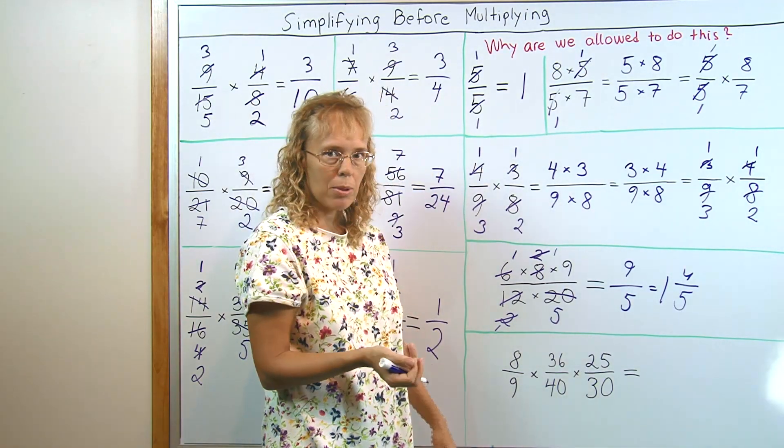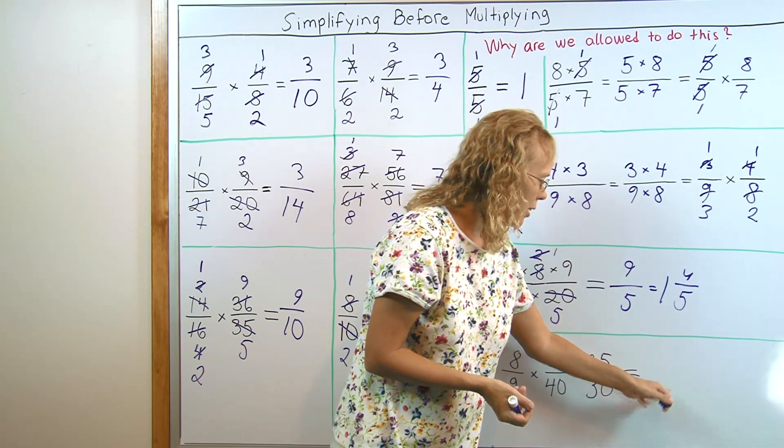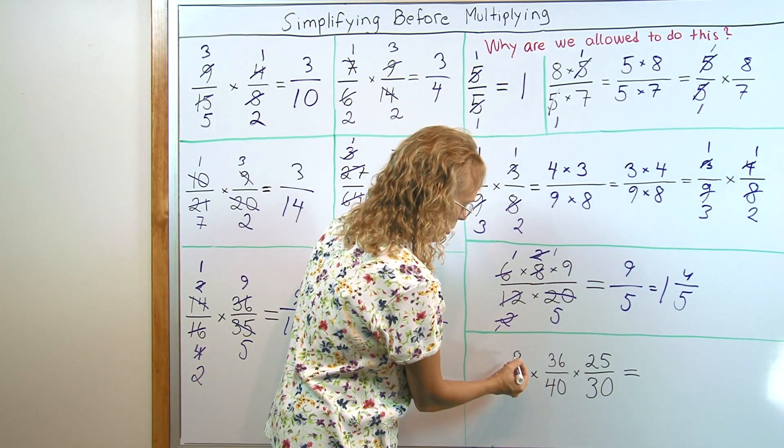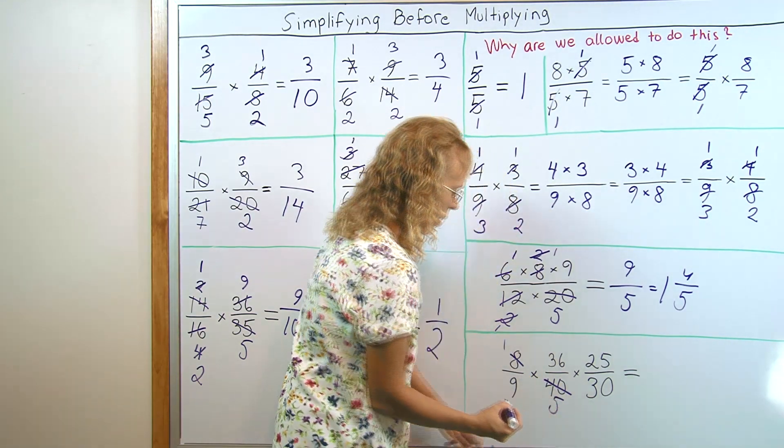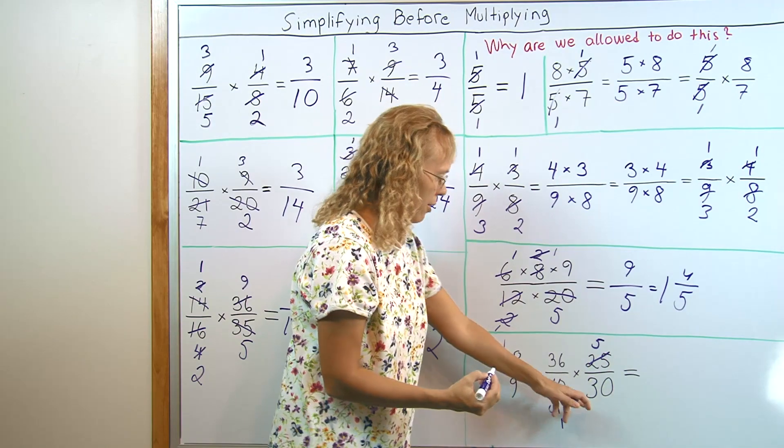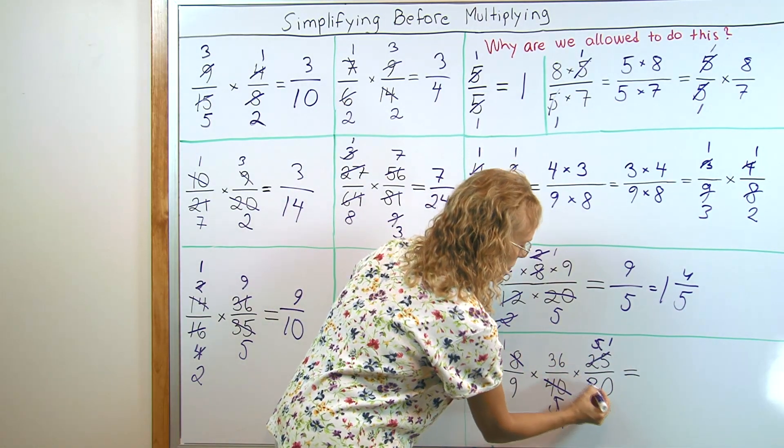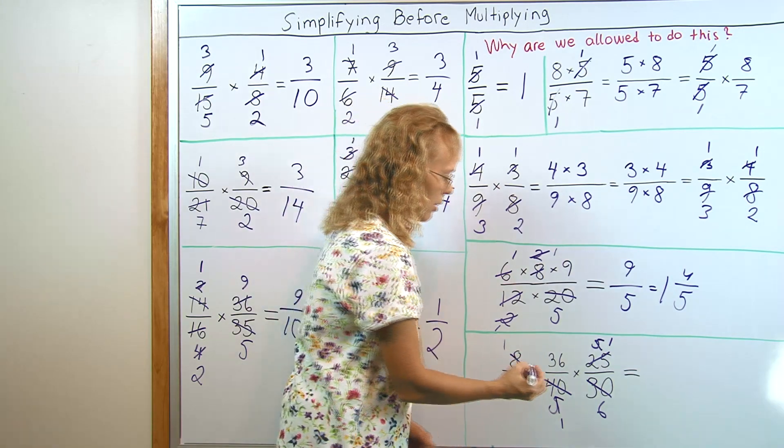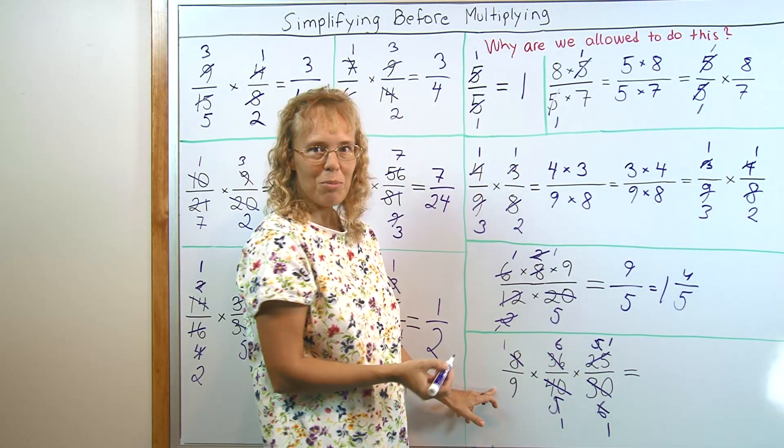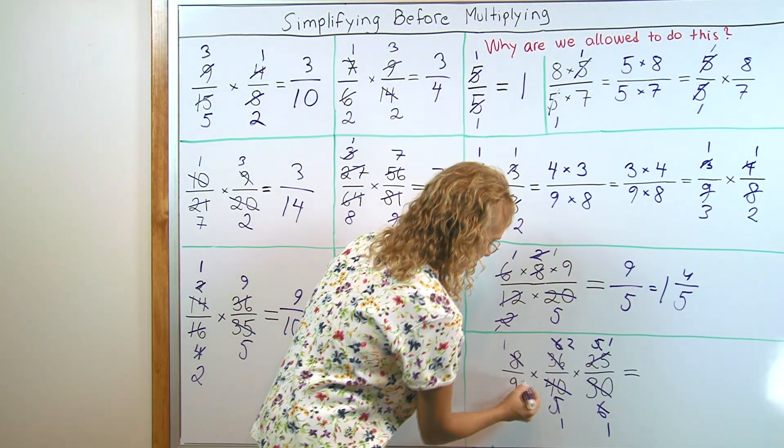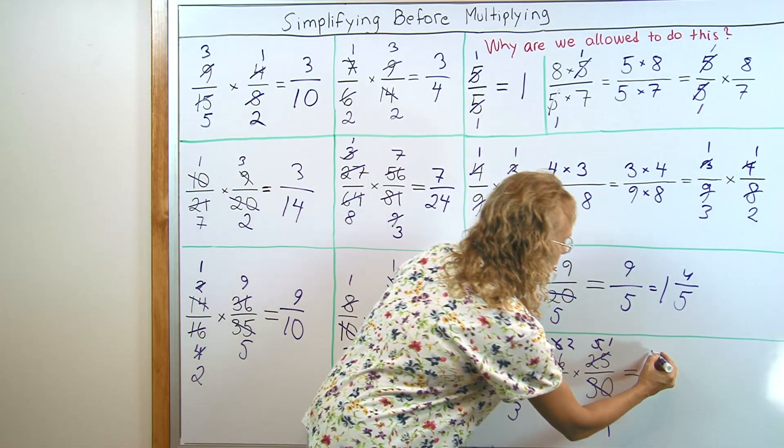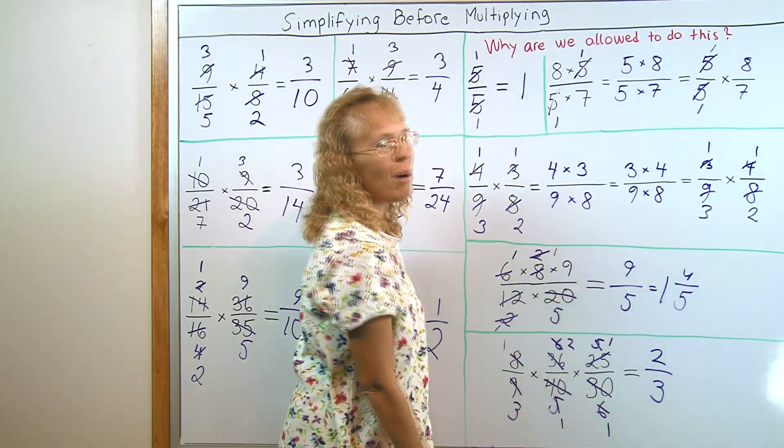And here the last example we have lots of numbers again. We surely don't want to start multiplying them all and then trying to figure out the simplifying. Let's just simplify before we get to multiplying. 8 and 40, for example, both divisible by 8. And then 5 and 25 are both divisible by 5. 5 and 30 are both divisible by 5. 6 and 36 are both divisible by 6. This just goes on and on. And then 6 and 9 are both divisible by 3. Now I just have 3, 1, 1 and 2, 1, 1 on top. So nothing simplifies more and it is 2 thirds. Wow! So simple.